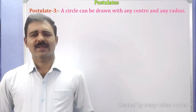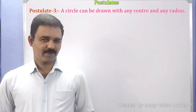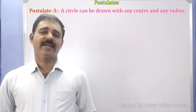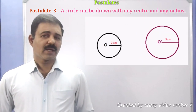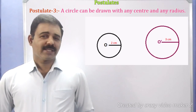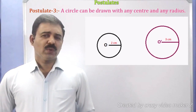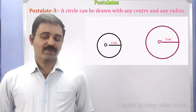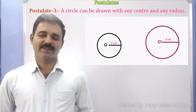Now, Postulate 3 states that a circle can be drawn with any center and any radius. In the figure, there are two circles given — centers are O and O-dash, with radii of 2 cm and 3 cm respectively. There are two circles with centers O and O-dash with radii 2 and 3 cm. We can draw any circle at any radius with any center.